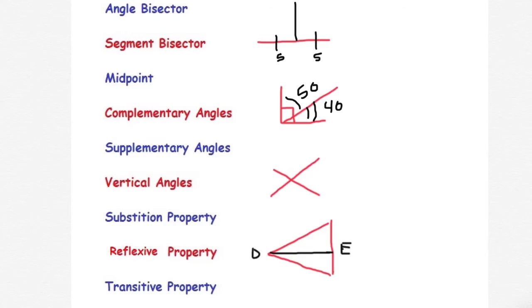Vertical angle means when you cross two lines, this angle is equivalent to this angle. Likewise, this angle is equivalent to this angle. So let's say this is 40, this means this side is 40.